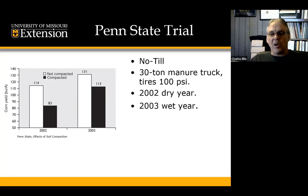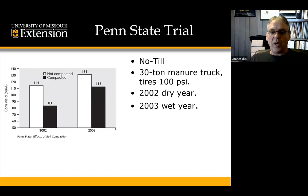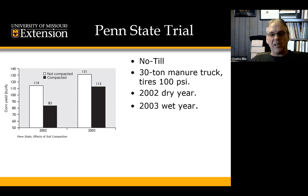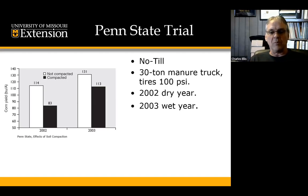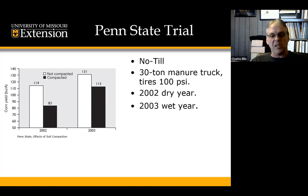Back to the might and maybe scenario of the effect of yield from soil compaction: Penn State trials in two years with stressful growing conditions under no-till, where the soil was compacted with 30-ton tires. In 2012, defined as a dry year, they had a significant yield reduction from 114 down to 83 bushels per acre. And in 2003, defined as a wet year, they had a reduction from 131 down to 113. So in those years where we don't have perfect growing conditions, we're seeing soil compaction events accentuated.